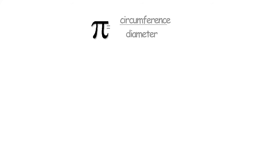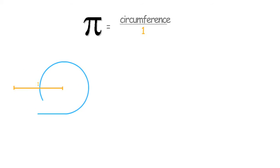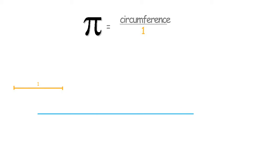In school, we learned that pi is equal to the circumference over the diameter. So we'll take a look at the circle again. We have a diameter of one, and measuring the circumference is 3.14159 and so on, which is equal to pi.